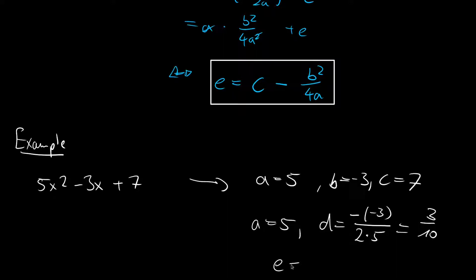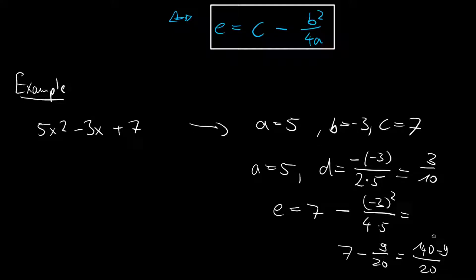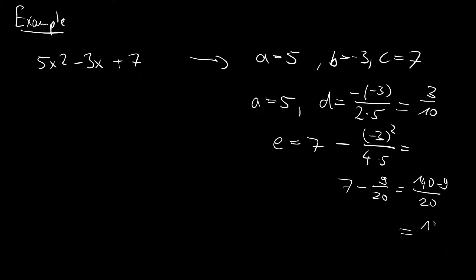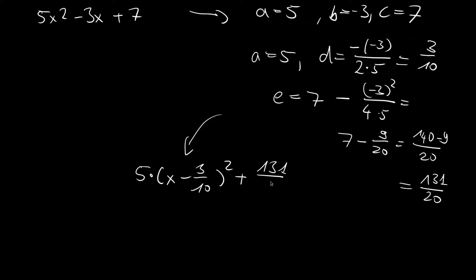So d equals 3 over 10. Our e equals c minus b squared over 4a, which is 7 minus minus 3 squared over 4 times 5, giving 7 minus 9 over 20. Multiplying through with 20 gives 140 minus 9 over 20, equaling 131 over 20. The completed square form is 5 times x minus 3 over 10 in brackets squared plus 131 over 20.